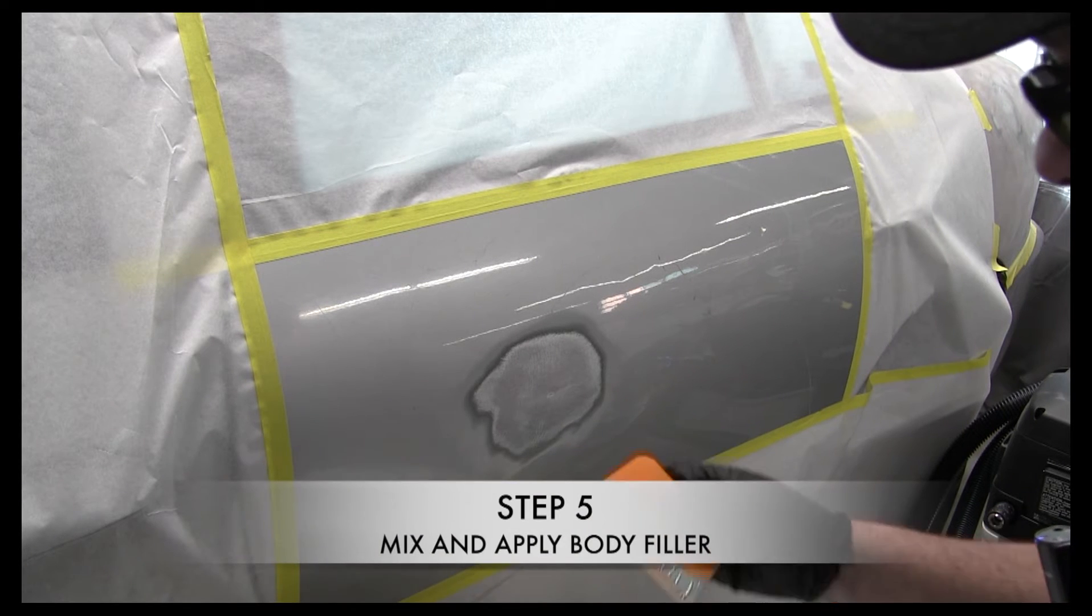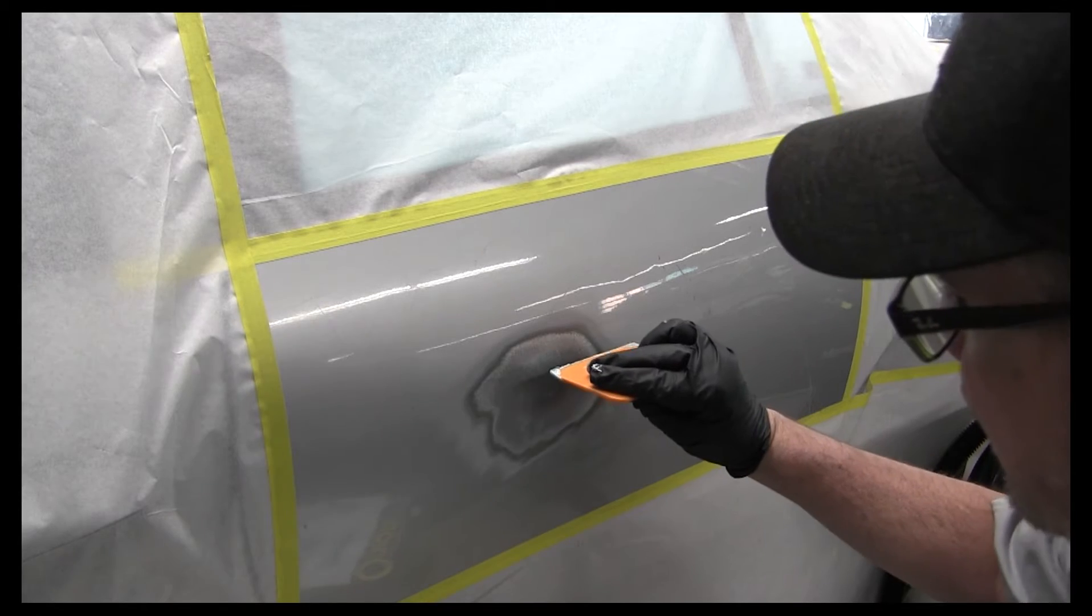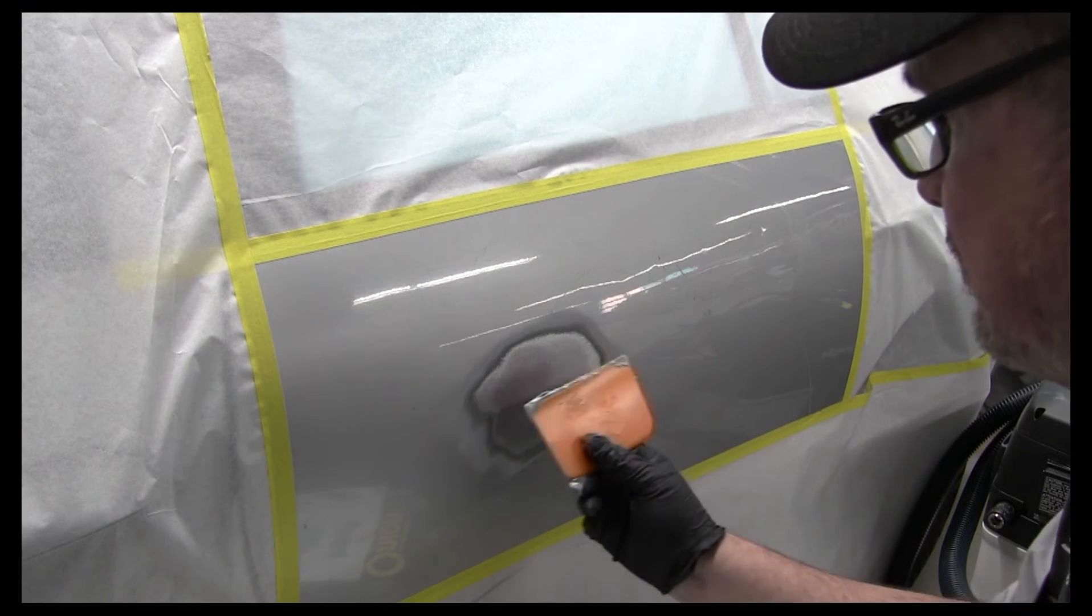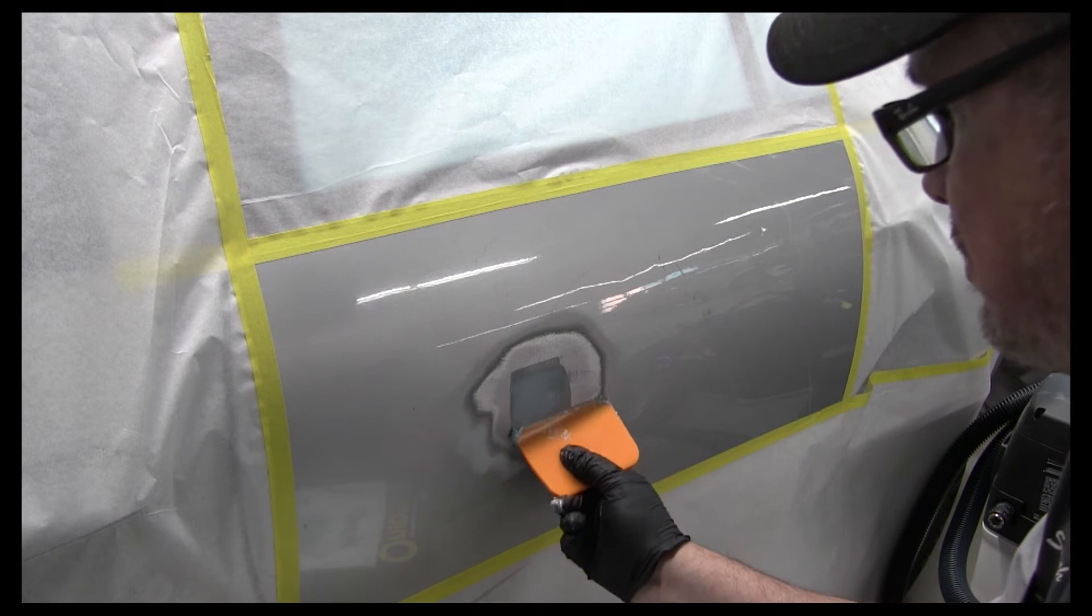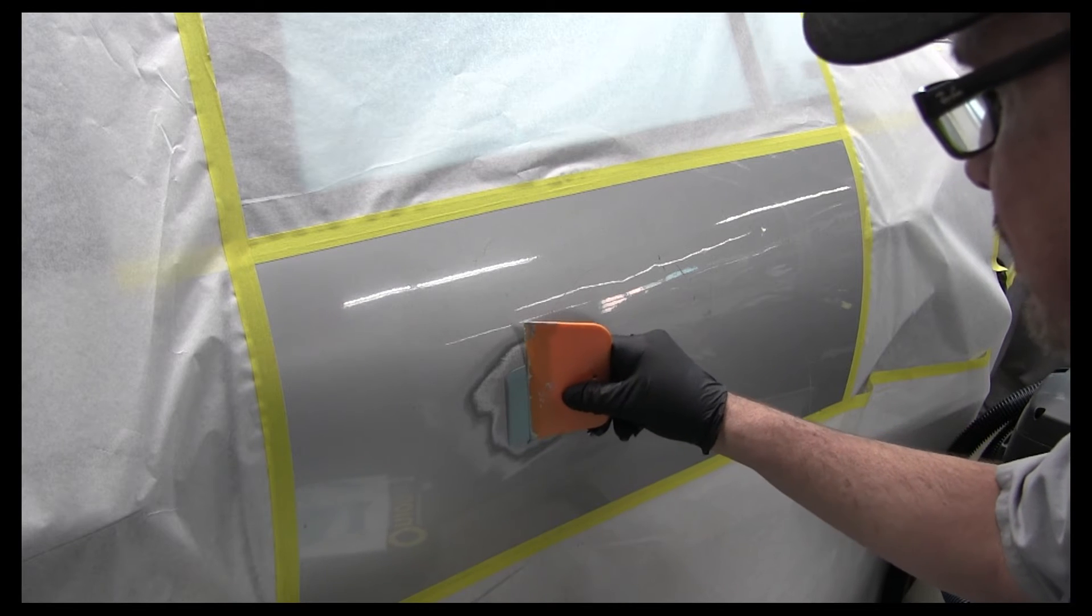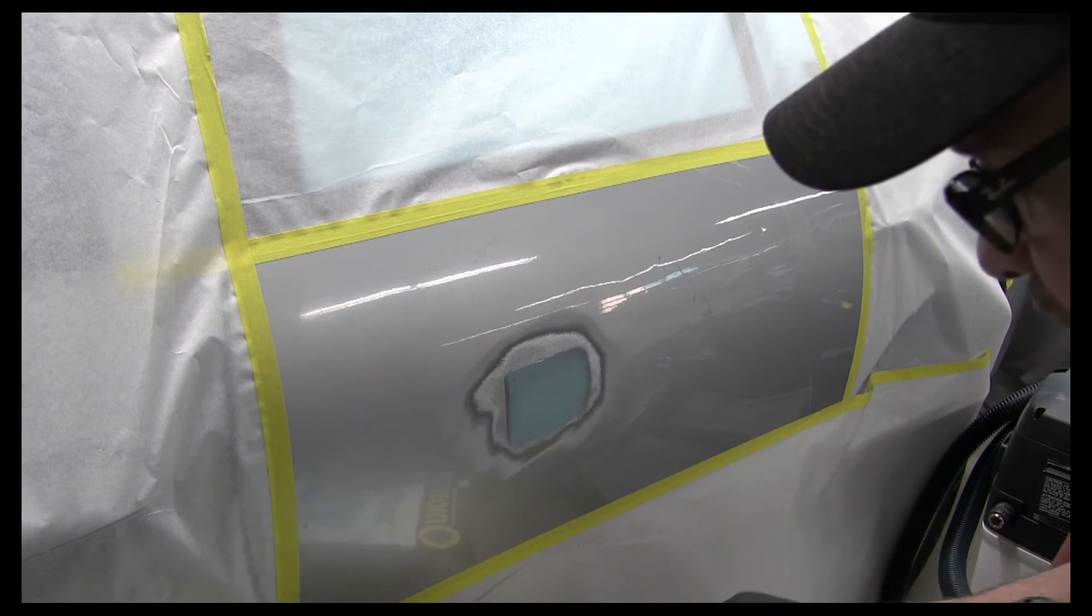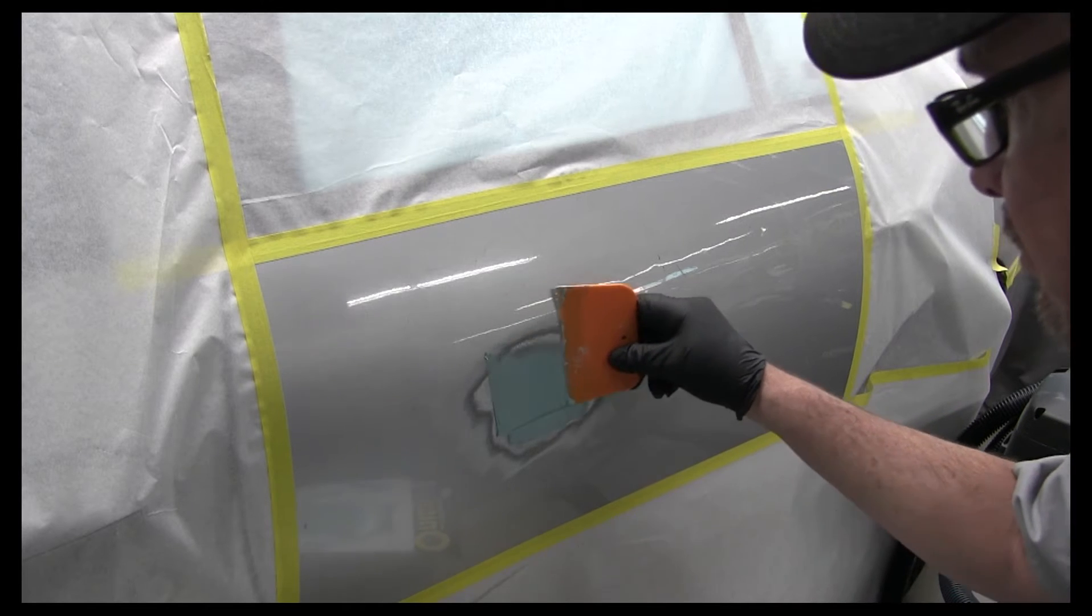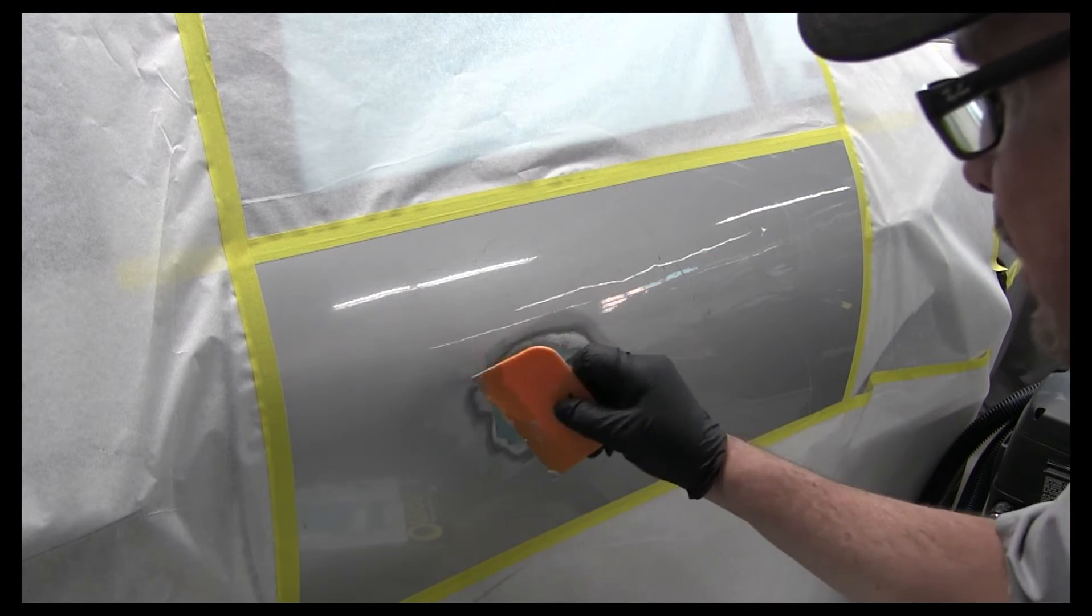I've got some body filler mixed up and this is not going to take much. It's not a very big dent. I'm going to apply it on here. I'm going to try to stay within this metal area. I want to put a tight coat first, meaning you want to push down tight. Push down hard. And then I'm going to come back with a fill coat, which I allow a little bit more of it to fill the damaged area.